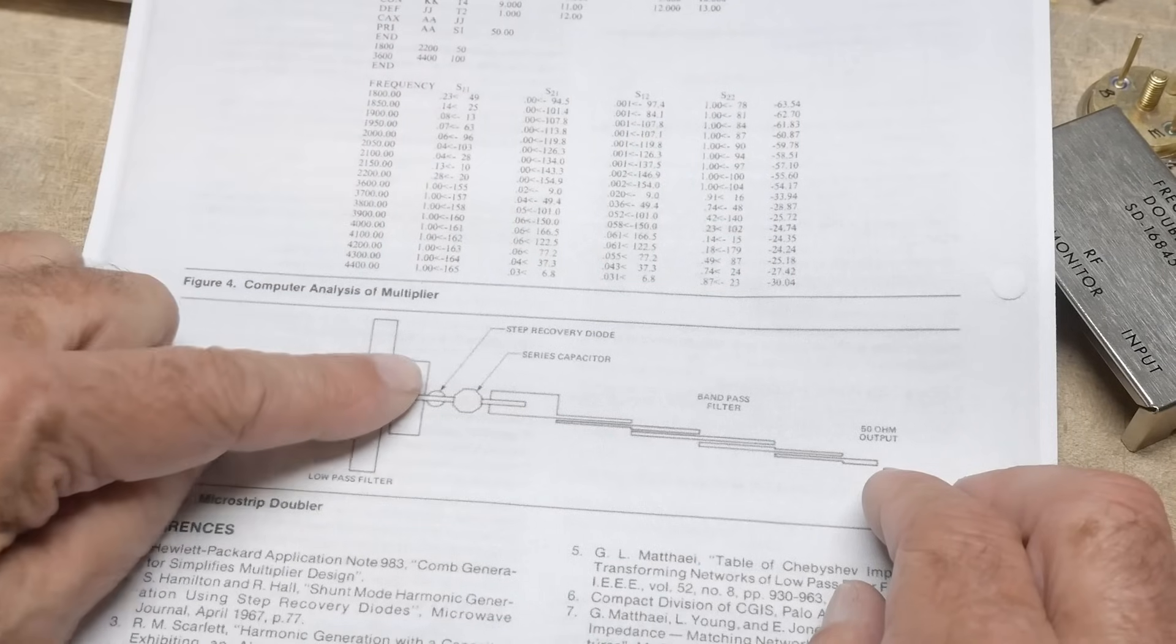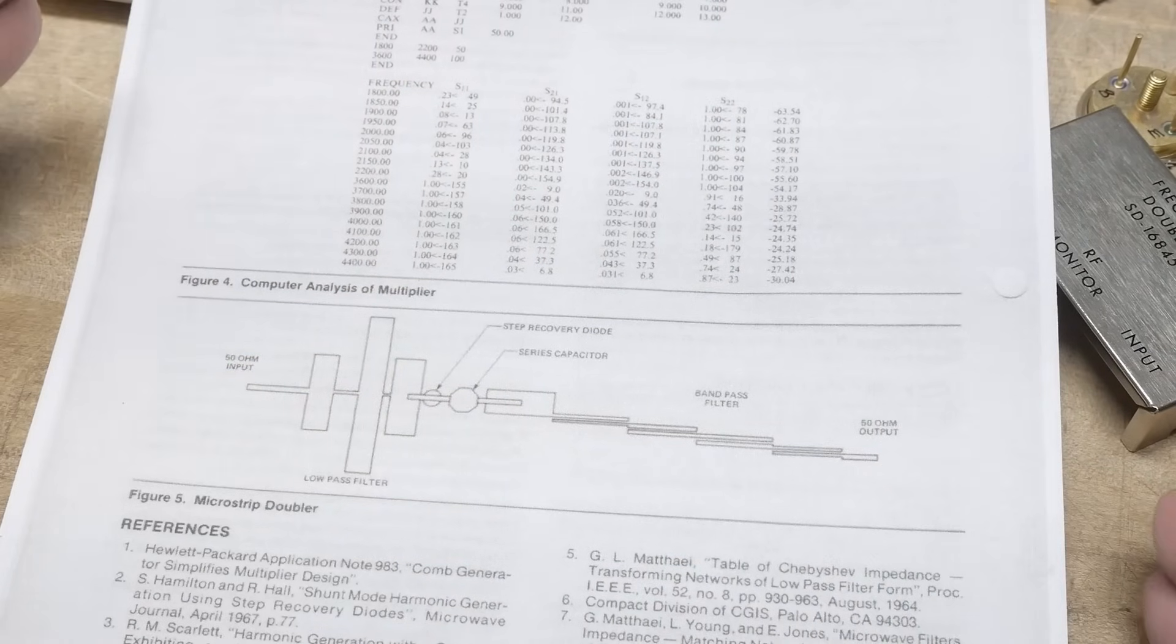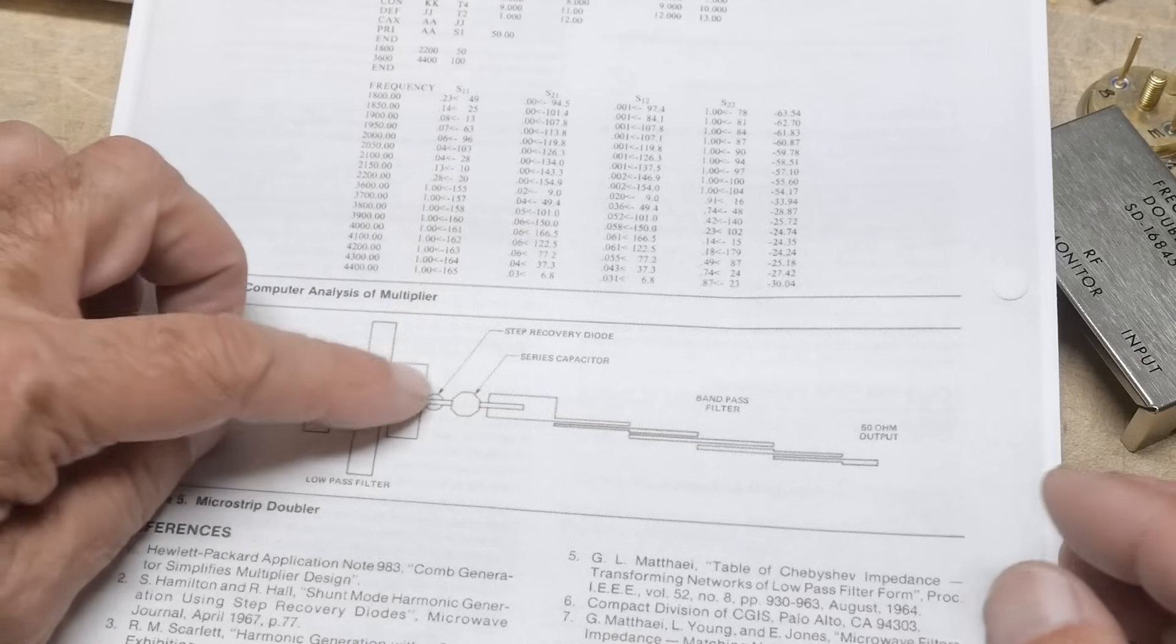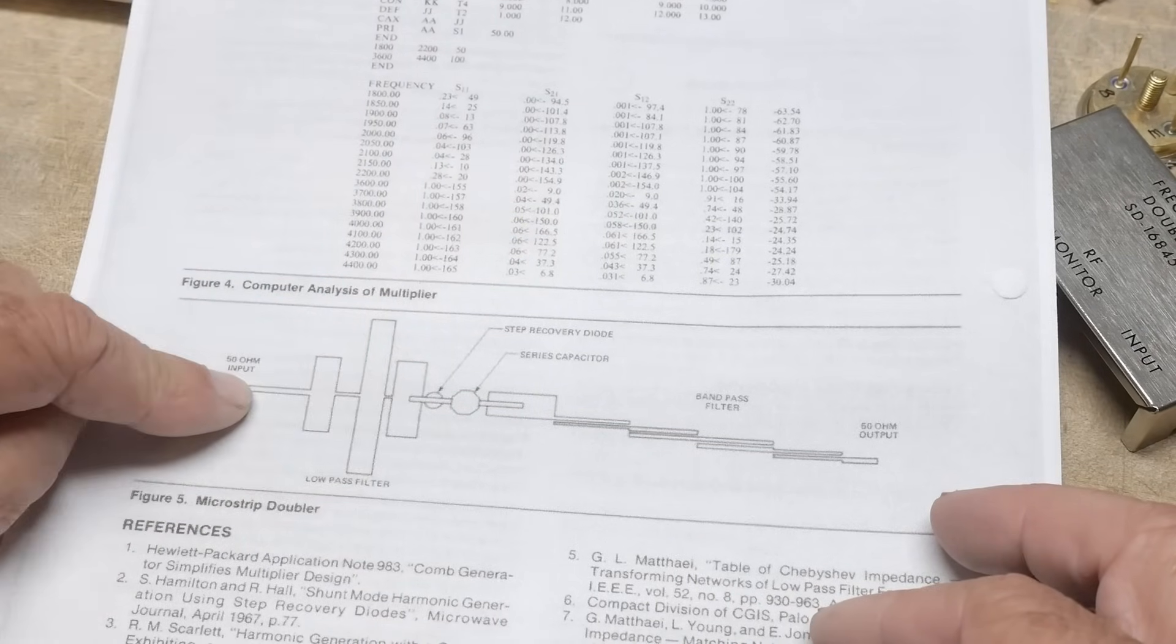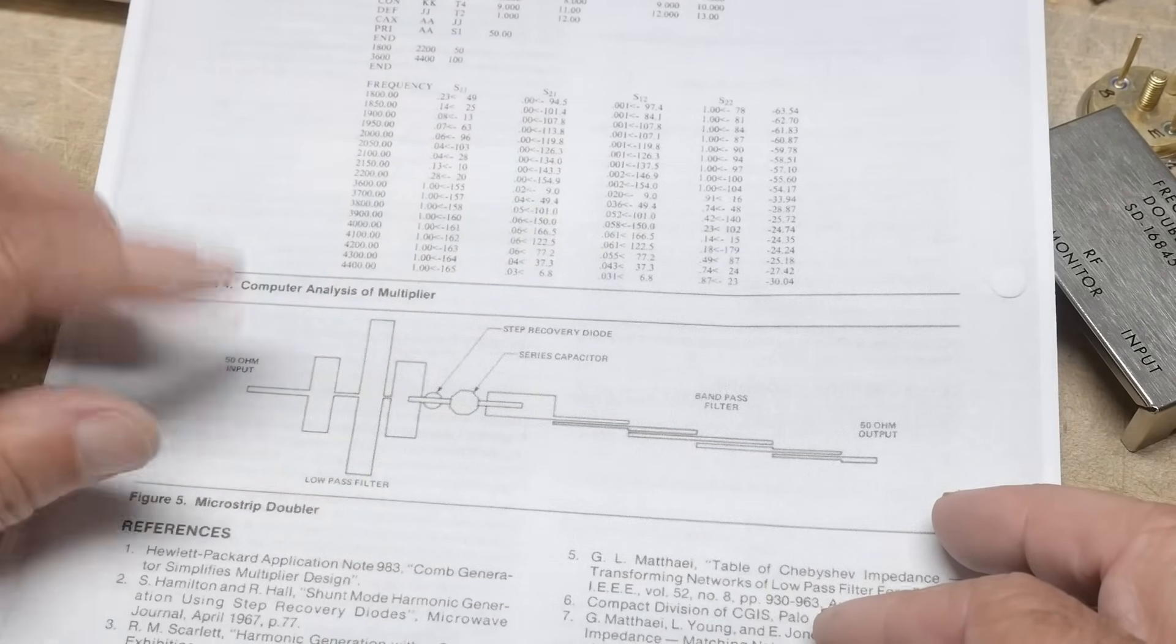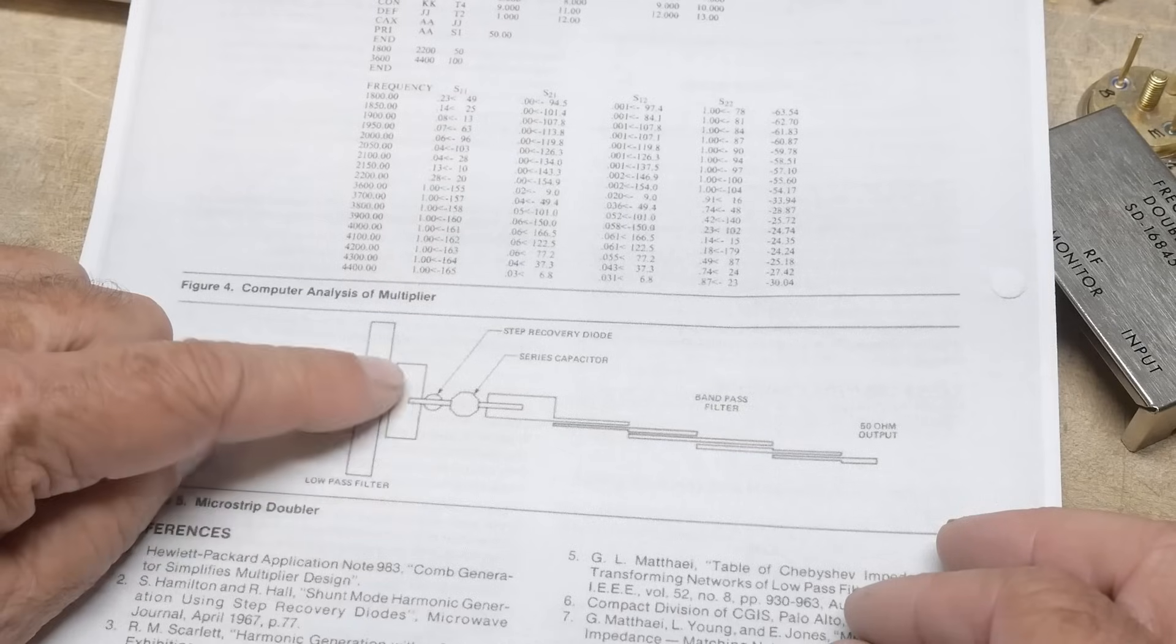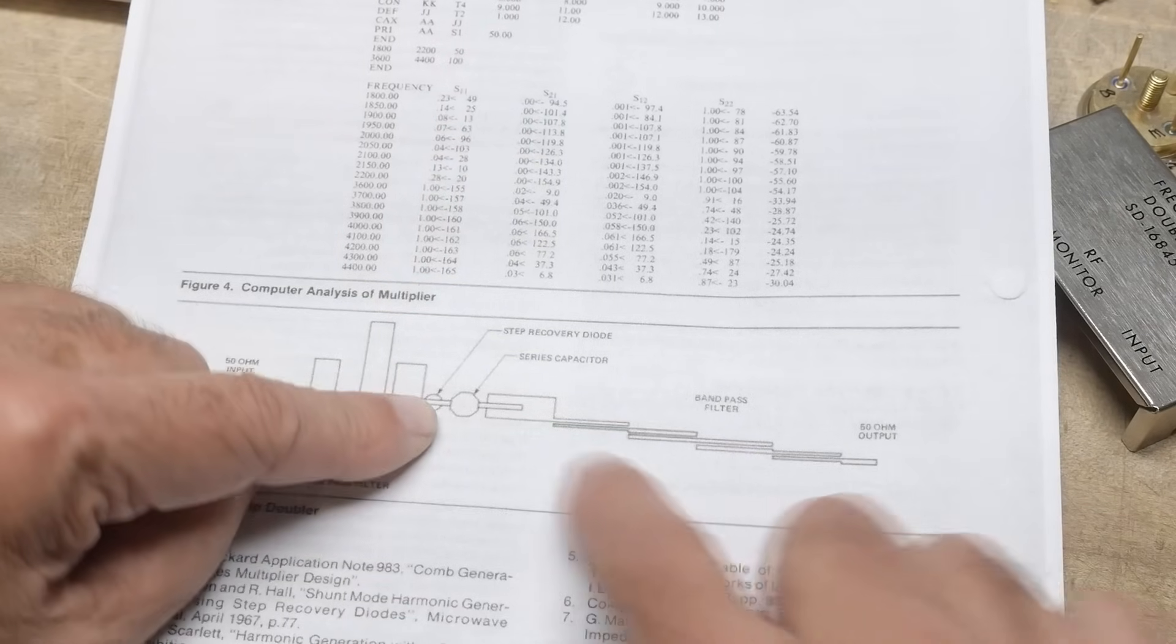And so you put a low pass filter here of, say, 1.1 gigahertz. So it'll let through 1 gigahertz, but the reason that you want it to attenuate is that if this step recovery diode generates harmonics, those harmonics will go in both directions.